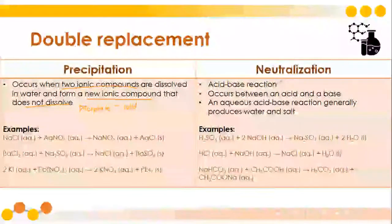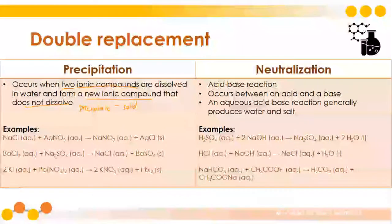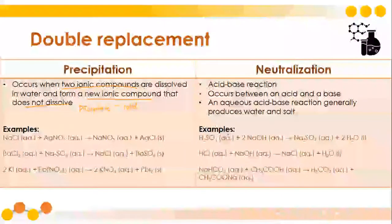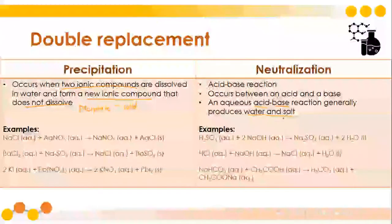Next we have neutralization, usually observed in acid-base reactions. An acid-base reaction occurs between an acid and a base, and an aqueous acid-base reaction generally produces water and salt. For example, H₂SO₄ combined with NaOH will produce an aqueous solution considered as salt and water. Combining a strong acid and a base will produce water and different kinds of salt. Precipitation and neutralization both involve the process of double replacement.